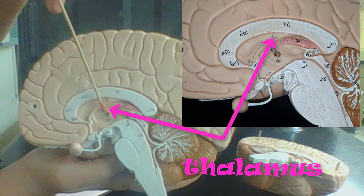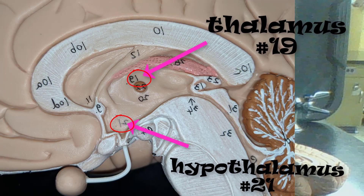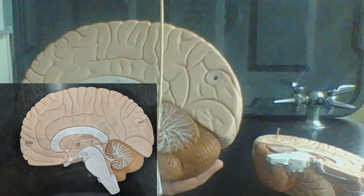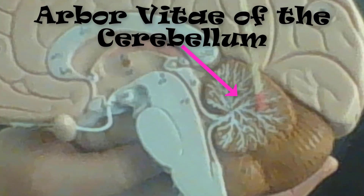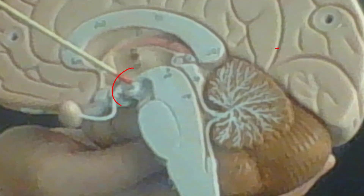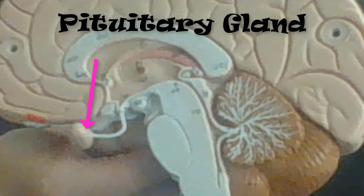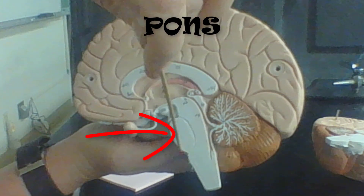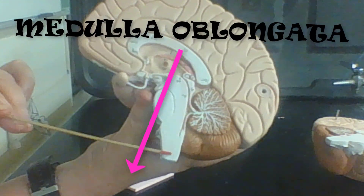This is the thalamus. Down here is the hypothalamus — number 21 in this model. This is the mid-sagittal view of the cerebellum, which shows these branch-like structures called the arbor vitae of the cerebellum. Here are some midbrain structures — this is a mammillary body. This structure here is the pituitary gland. Where I have this bump here, this is the pons. This would be the medulla oblongata.